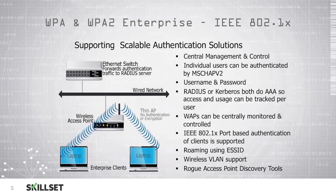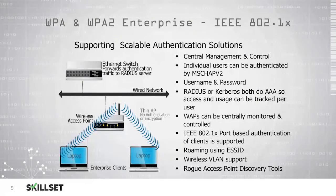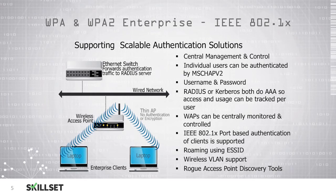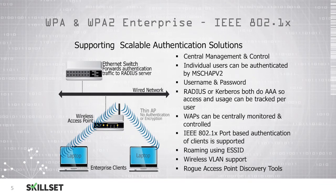WPA and WPA2 Enterprise support the IEEE 802.1x standard, enabling scalable authentication where you can centrally manage and control the individuals that access your network. Users can be authenticated by Microsoft CHAP version 2 by providing their username and password. Both RADIUS and Kerberos provide authentication, authorization, and accounting so that access and usage can be tracked on a per-user basis. Your wireless access points can be centrally controlled and monitored, and port-based authentication of clients is supported.